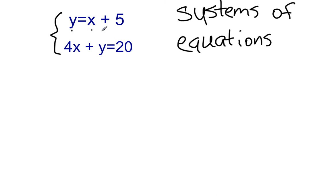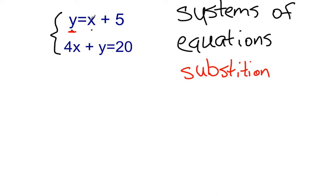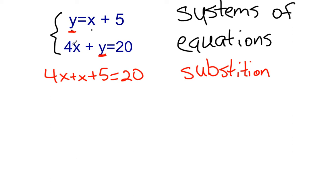For today, let's use a little bit of math to solve this — we're going to solve with substitution. We have the equation Y equals X plus 5, so anytime we see Y we can say it's equal to X plus 5. We can go to our second equation, take this Y, and replace it with X plus 5. So we rewrite the second equation as 4X plus (X plus 5) equals 20.